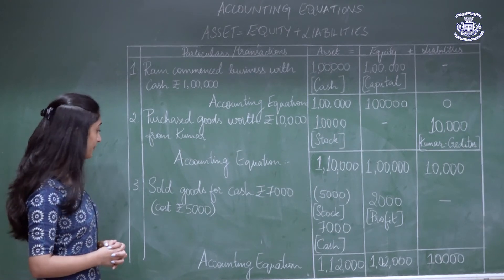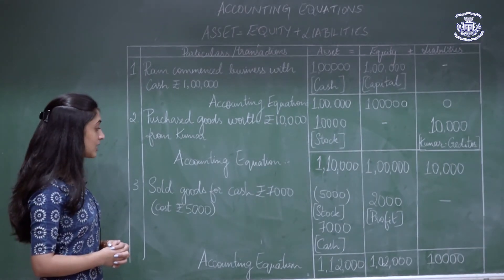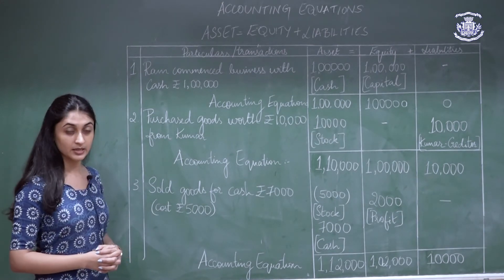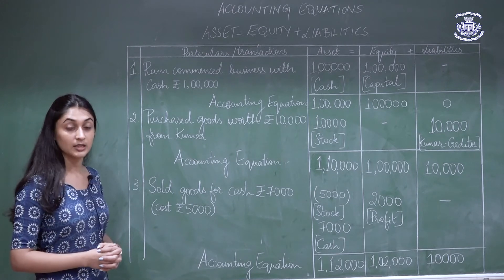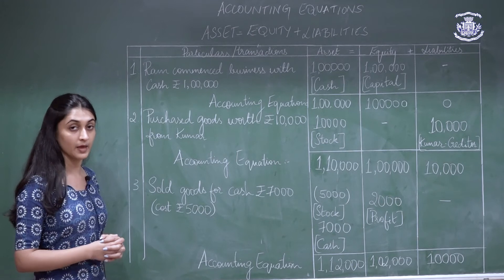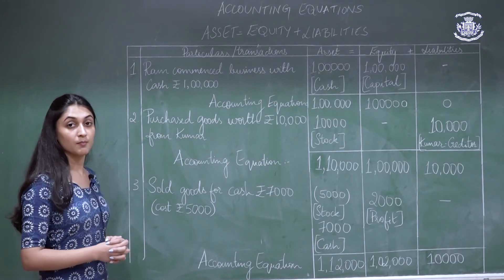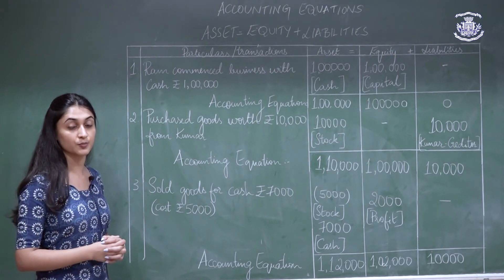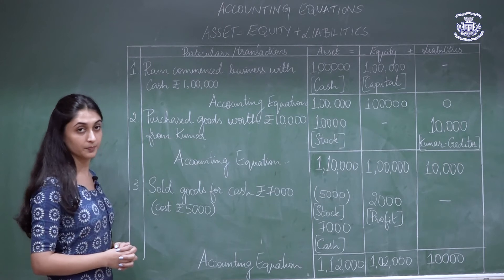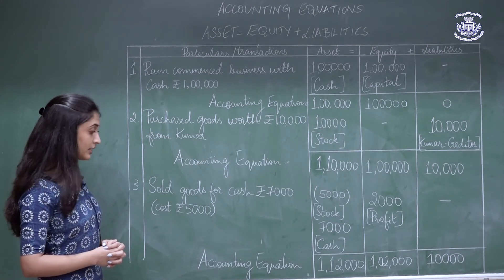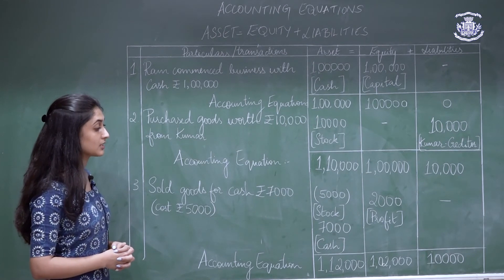The third transaction: sold goods for cash rupees 7,000, the cost of which is rupees 5,000. Since goods are sold for 7,000, cash increases by 7,000 — so we add 7,000 to the assets column. The value of goods sold is 5,000, so stock reduces by 5,000 in the assets column. The profit is 7,000 minus 5,000 = rupees 2,000, which is added to the equity column. The new accounting equation is: Assets 1,12,000 = Equity 1,02,000 + Liabilities 10,000.